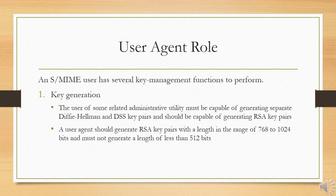A S/MIME user has several key management functions to perform. First, key generation: the user or some related administrative utility must be capable of generating separate Diffie-Hellman and DSS key pairs, and should be capable of generating RSA key pairs. Each key pair must be generated from a good source of non-deterministic random input and be protected in a secure fashion. A user agent should generate RSA key pairs with a length in the range of 768 to 1024 bits and must not generate a length of less than 512 bits.